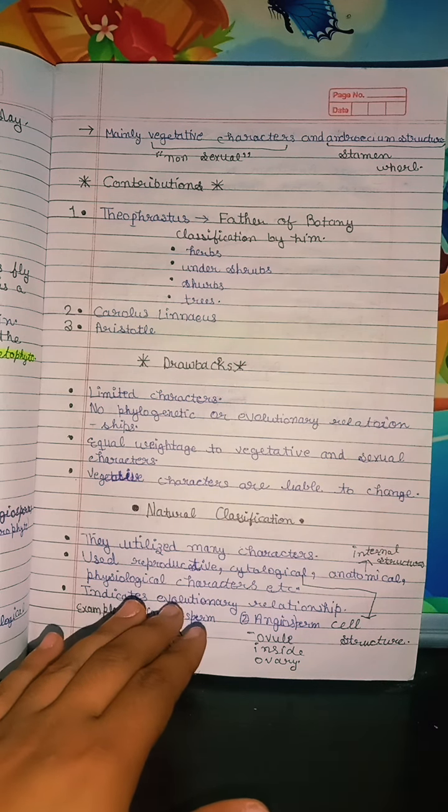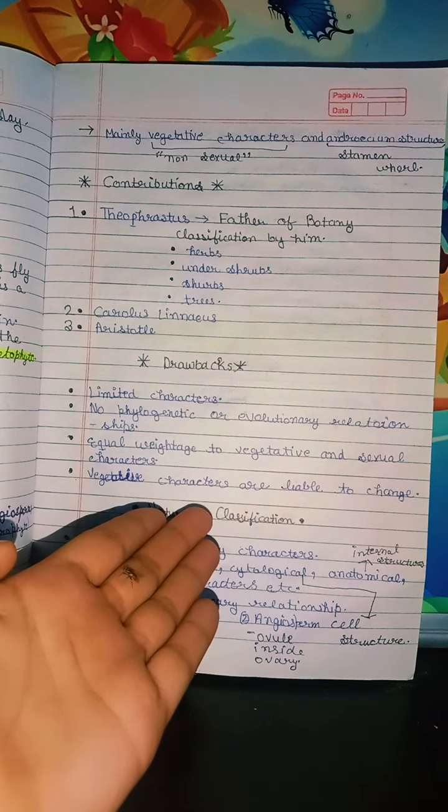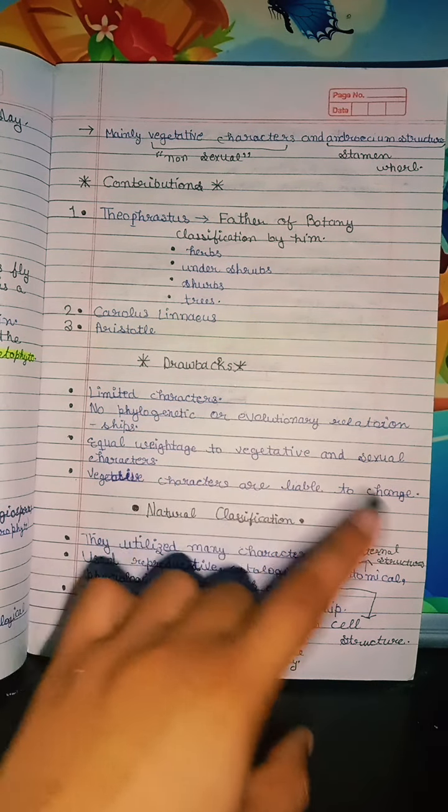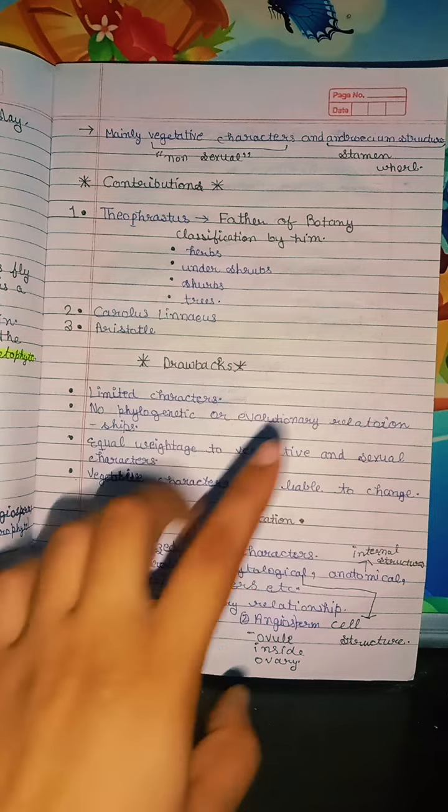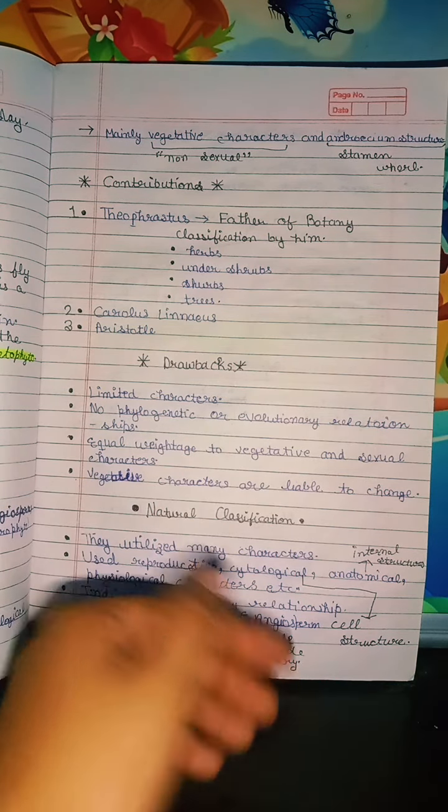Equal weightage was given to vegetative and sexual characters. But vegetative and sexual characters are more different. How did they give equal weightage?